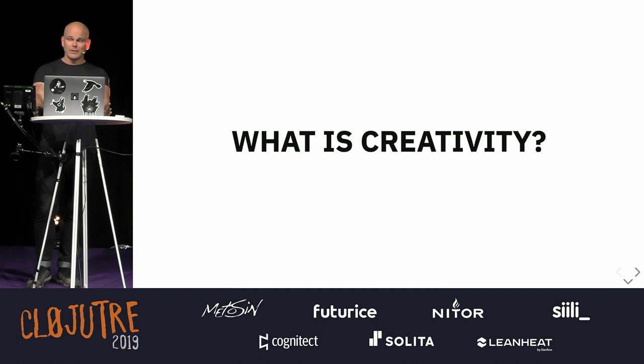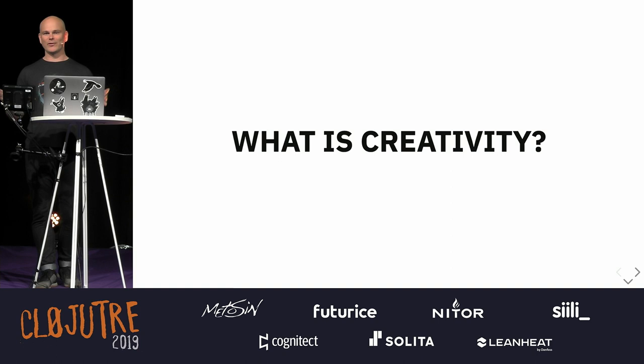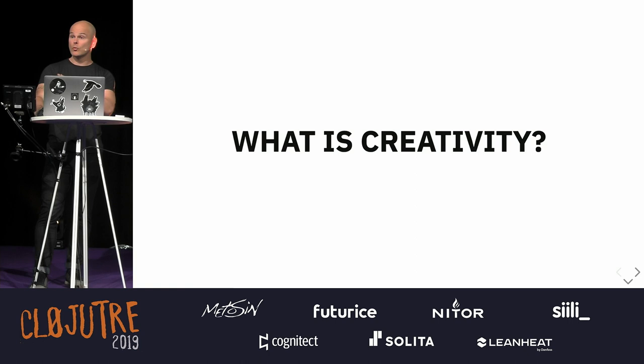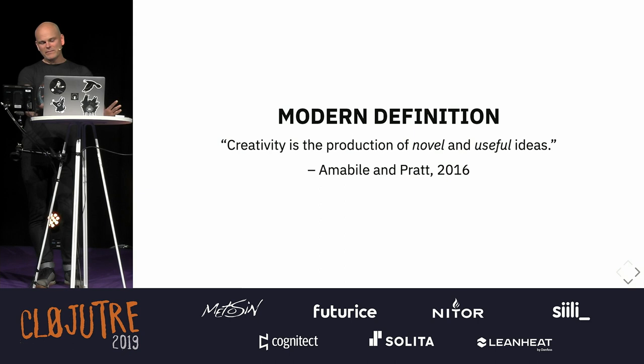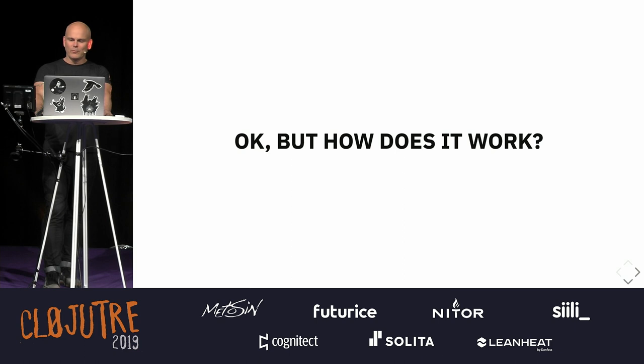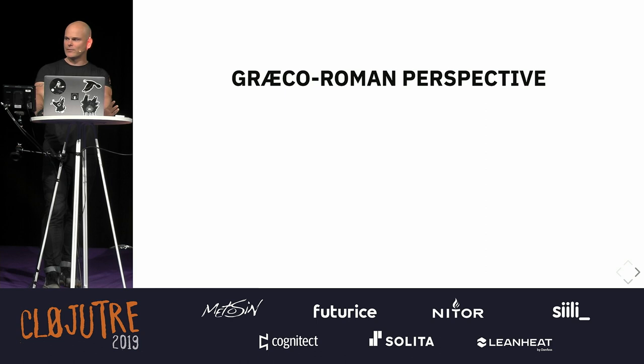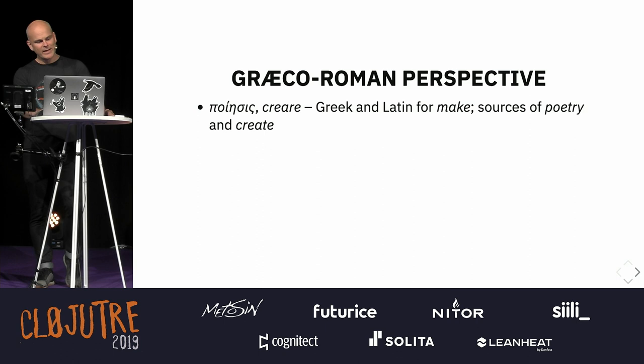If we're going to talk about creativity, we need to know: what is creativity? That's like a super easy question — the Wikipedia page is 20,000 words, there are 10 academic journals on the topic, and philosophers have been arguing about it for thousands of years, so I'm sure we'll get to the bottom of it here in this talk. The modern people — who are all horrible management consultants — think that creativity is the production of novel and useful ideas. I agree, sort of. Because this is a Clojure talk, we have to do some things with word origins. Rich Hickey has taught us that — we must talk about where words come from.